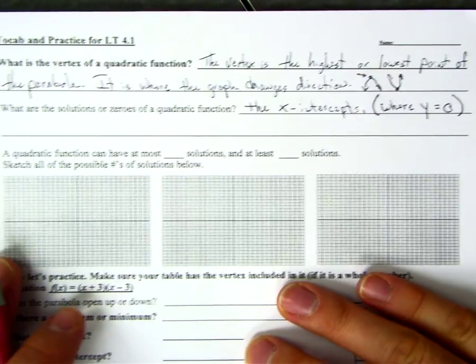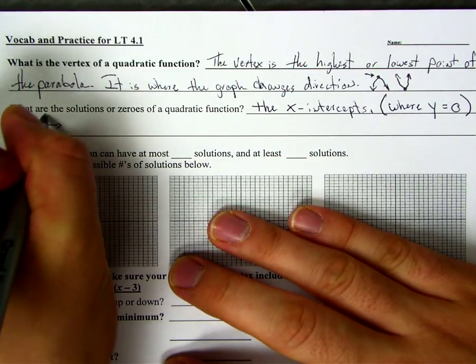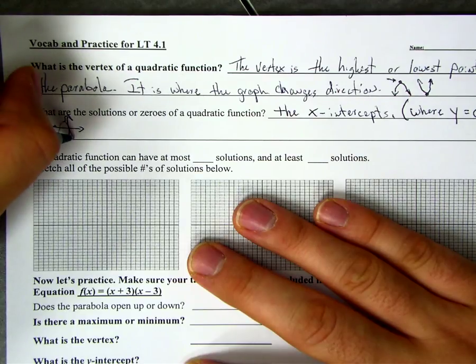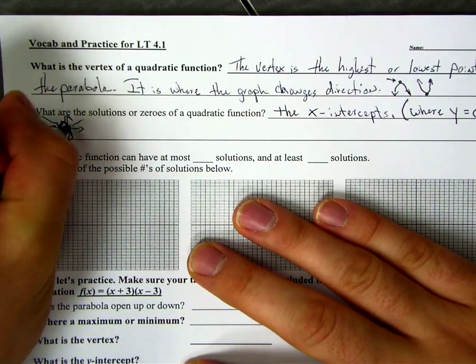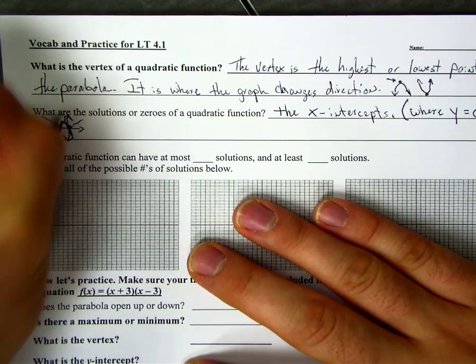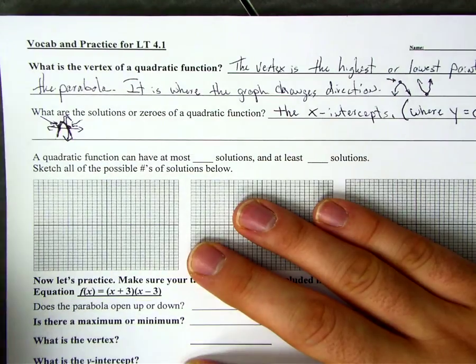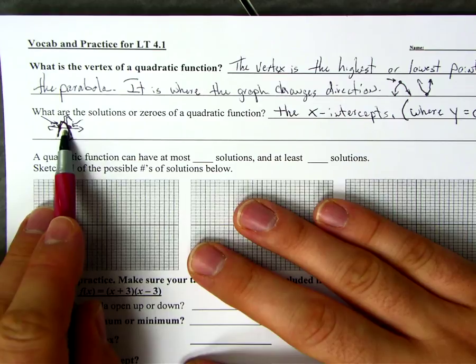So if we were to just kind of sketch one right on here, there's a coordinate plane, and if we sketched a parabola on here, right, this right here and this right here are solutions. Okay, where they cross the x-axis.